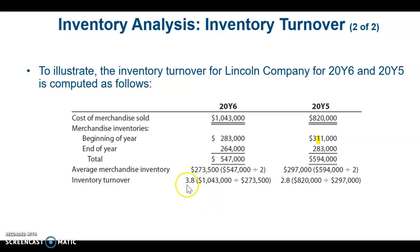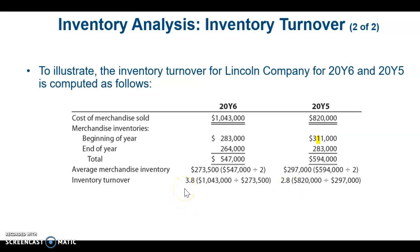So we're selling inventory 3.8 times during 2016, whereas in 2015 it was 2.8 times. That shows improvement, but we really need to compare our number to the industry average to see how we're doing relative to the industry.